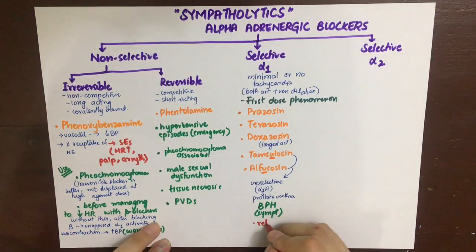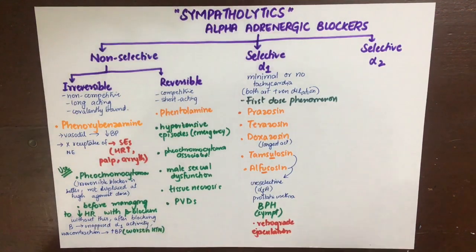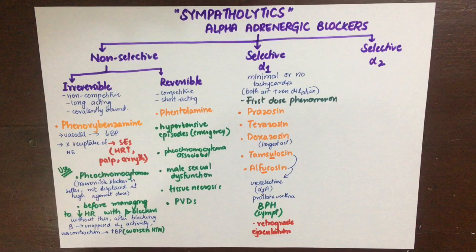A side effect of alpha-1 selective blockers is retrograde ejaculation, meaning semen goes into the bladder instead of being expelled normally.